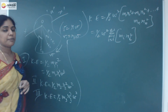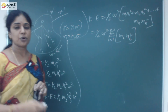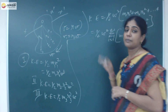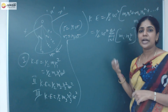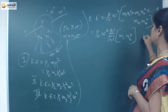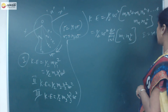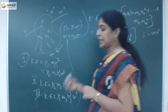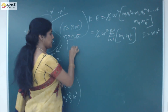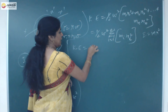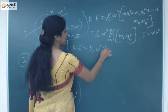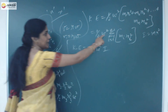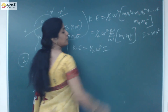We know that in translatory motion, mass is the coefficient of inertia. In rotational motion, the term sigma mi ri squared plays the same role. This is of the form m r squared, which is the moment of inertia formula. So I can write: kinetic energy is equal to half omega squared times I, where I is the moment of inertia.